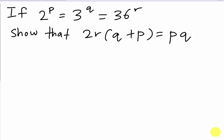The question is basically like this: if 2^P equals 3^Q equals 36^R, then you are asked to show that 2R(Q + P) equals PQ. A lot of students when they see something like this have no idea how to show it.